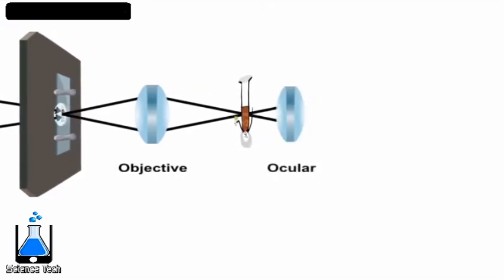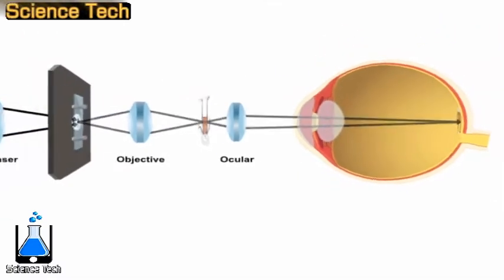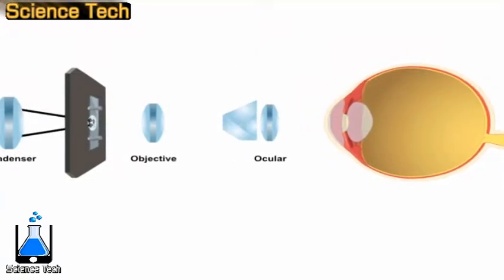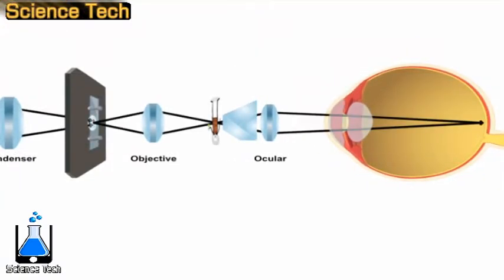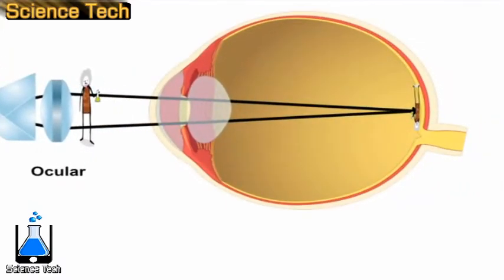The eyepiece, or ocular lens, further magnifies the image, which the eye then receives. Additional optical elements can be introduced into the light path in order to right the image so that the eye sees it in the correct orientation.